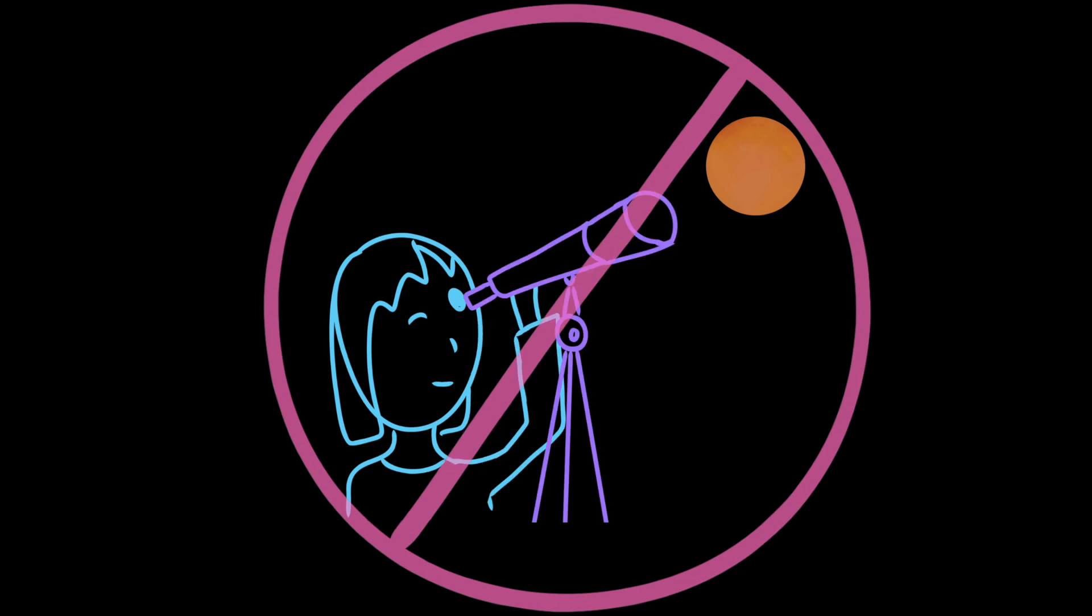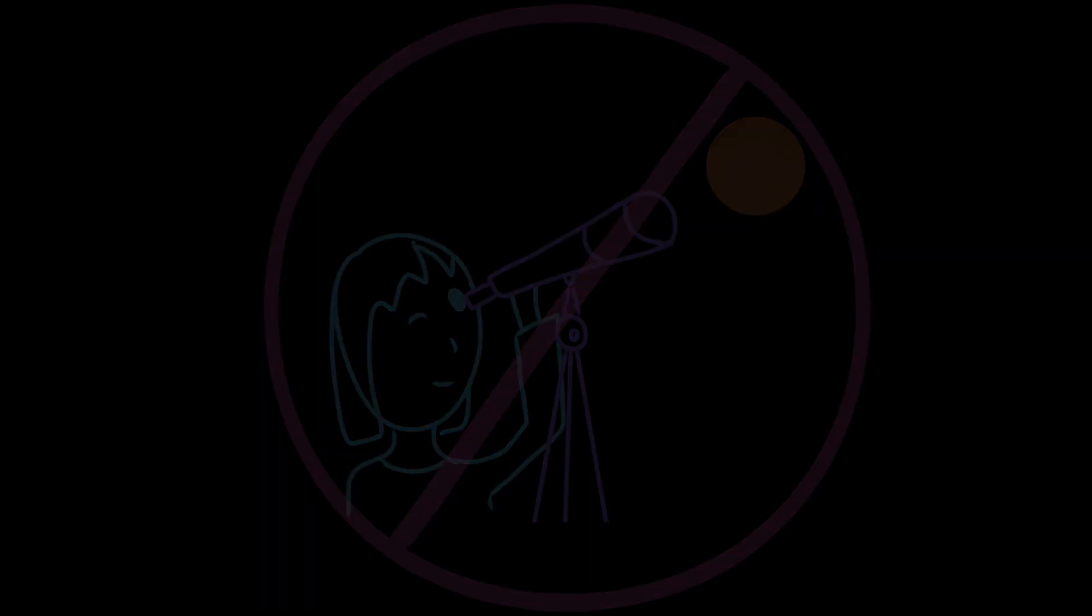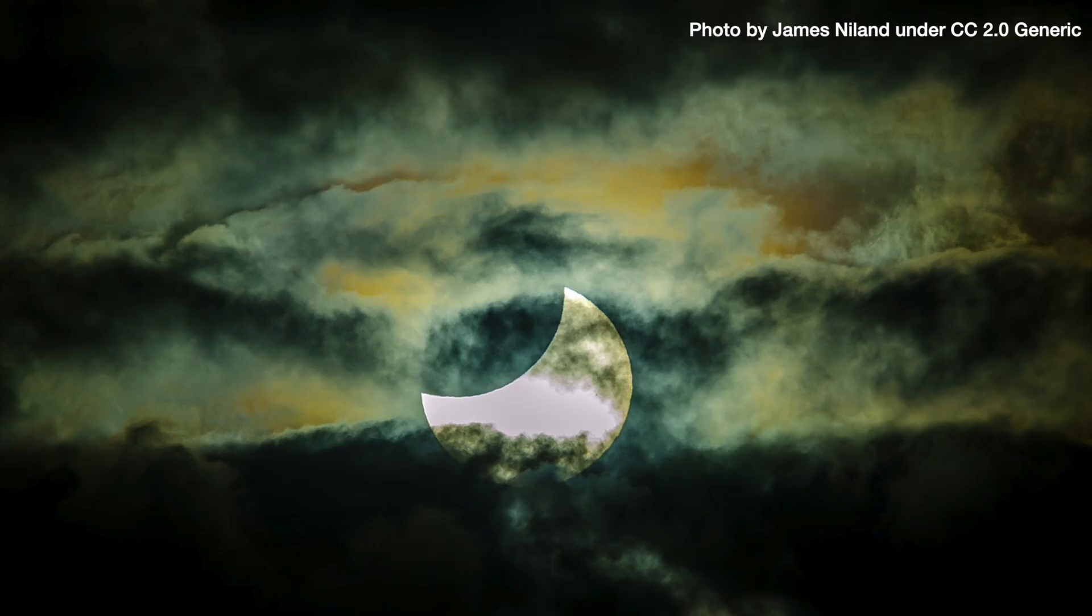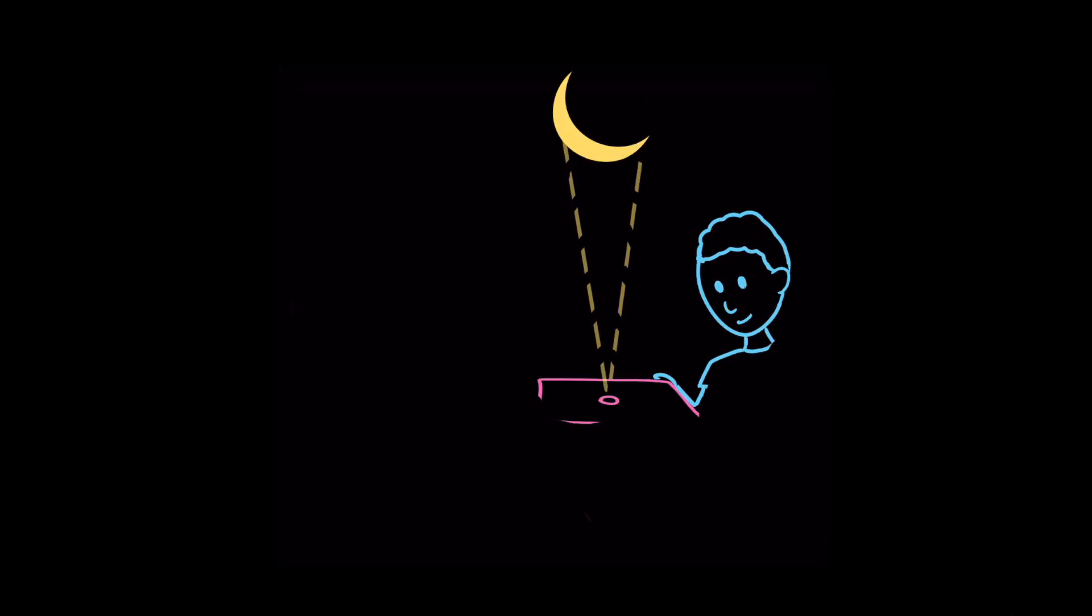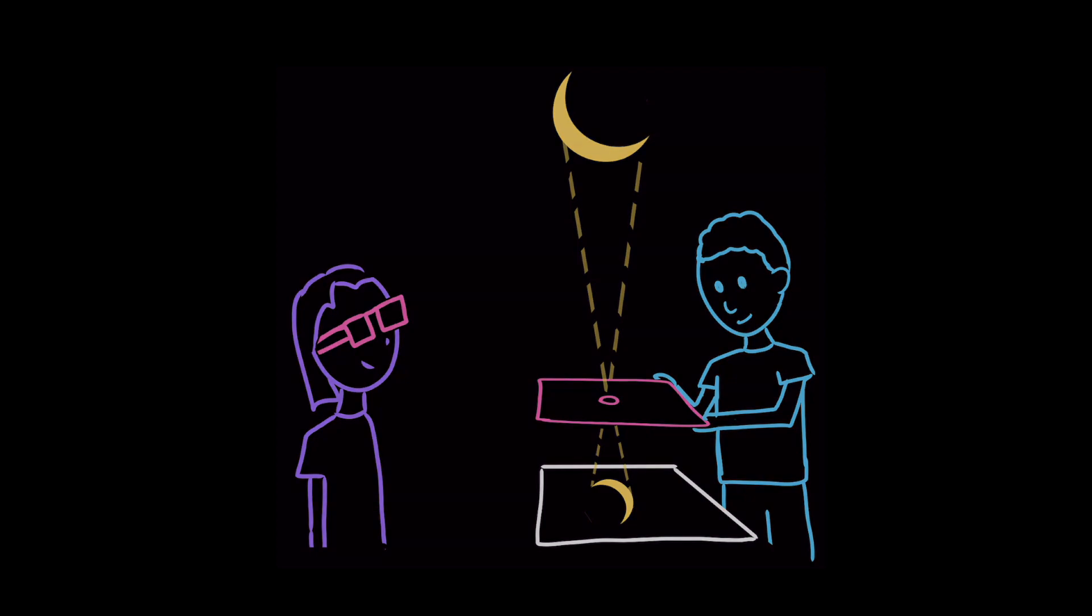Looking even for a few seconds can cause severe and permanent eye damage. Just because you can't look directly at the sun doesn't mean that you can't enjoy watching a solar eclipse, though. You can watch the eclipse in action through a pinhole viewer or ultraviolet ray blocking solar eclipse glasses.